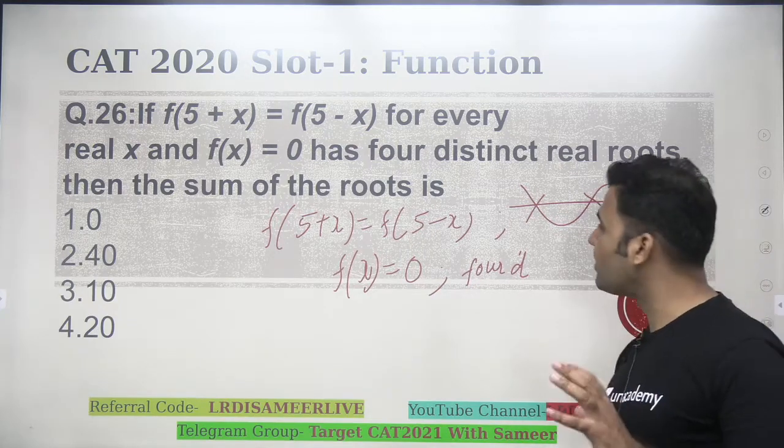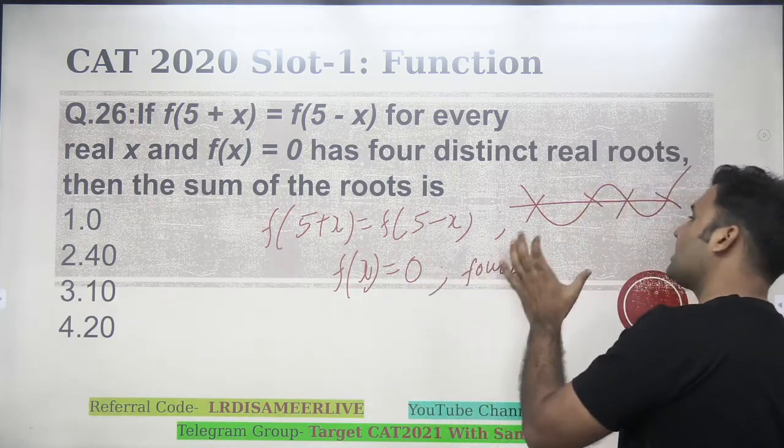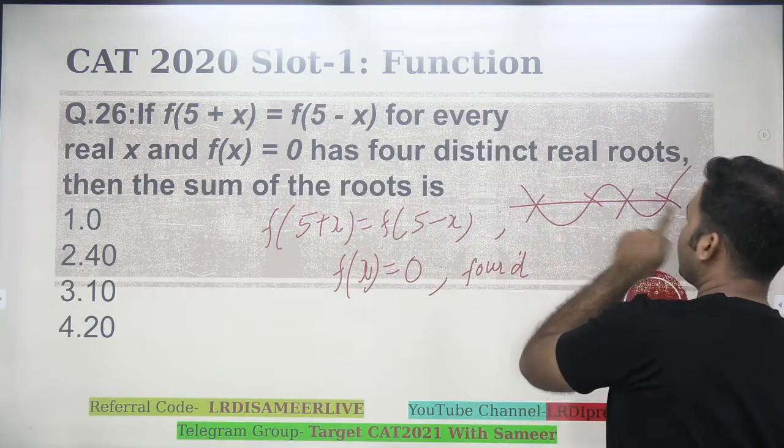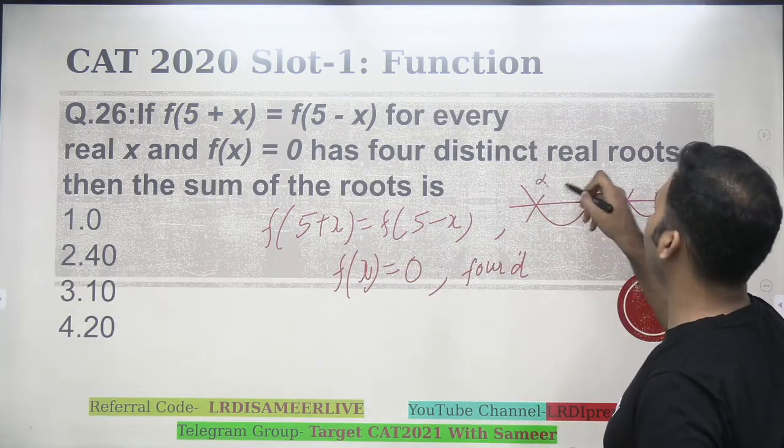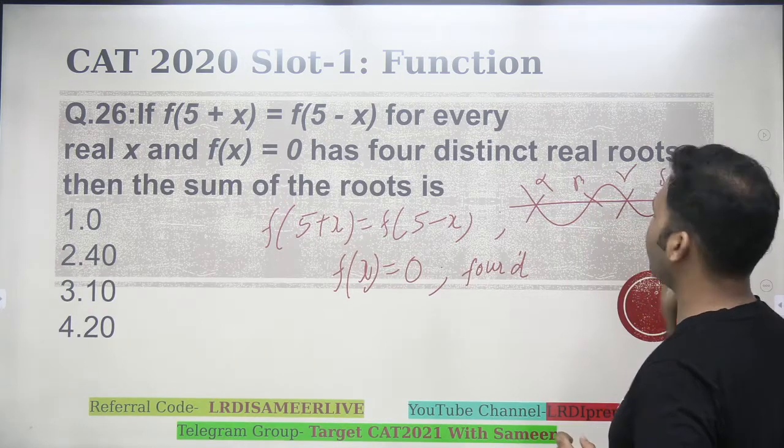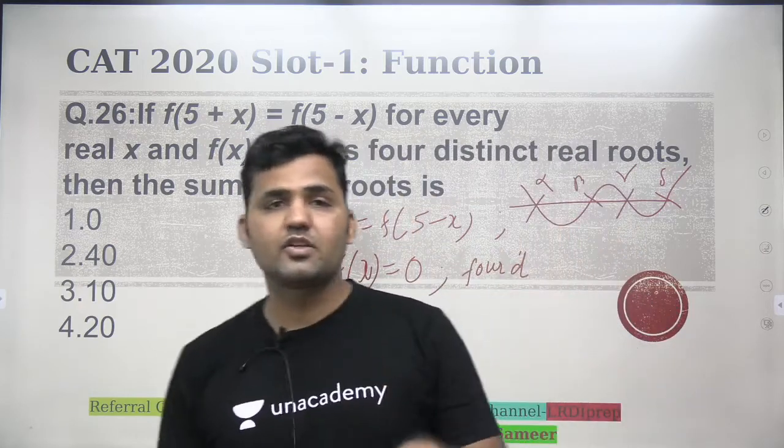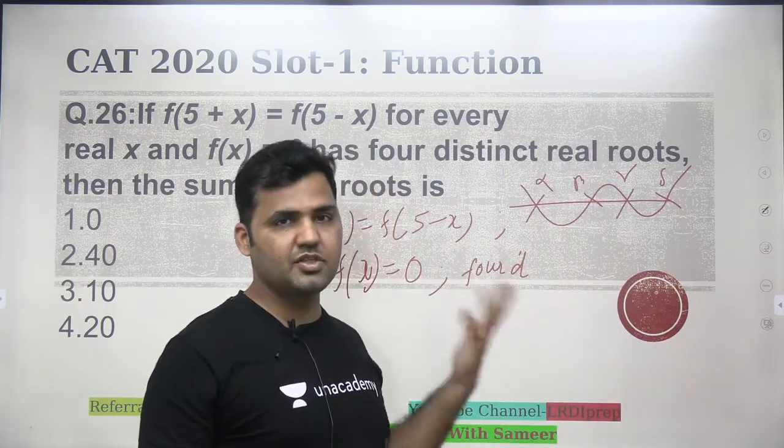1, 2, 3, 4. These are the 4 different values at which f of x will be, graph of f of x will be cutting the x-axis. So, these are the roots, alpha, beta, gamma, or delta. Whatever you want to take it as. What are the alpha, beta, gamma, delta? Basically, these are the values of x, those values of x at which f of x is becoming 0.